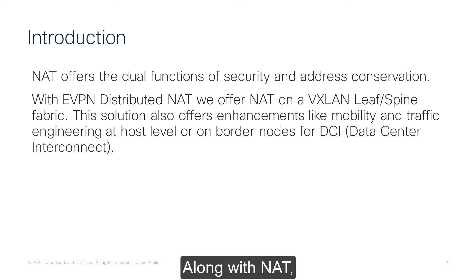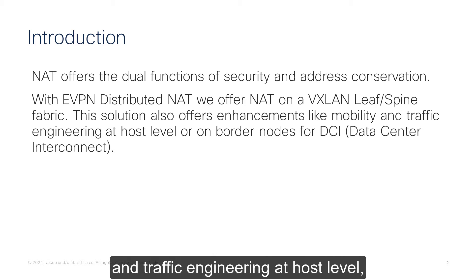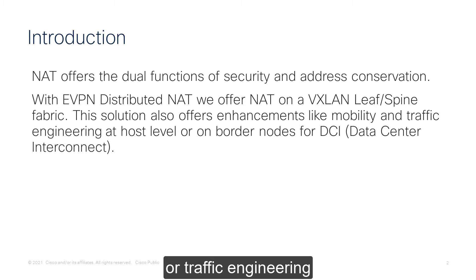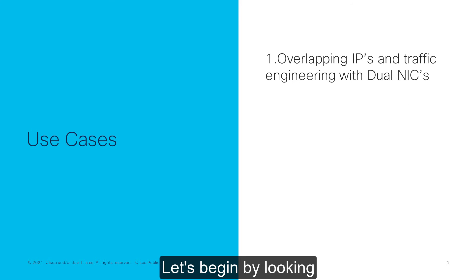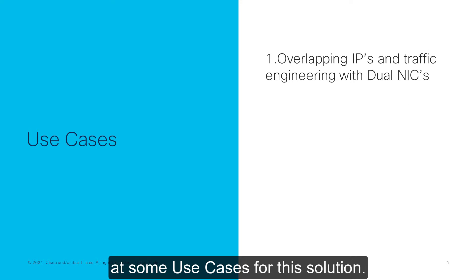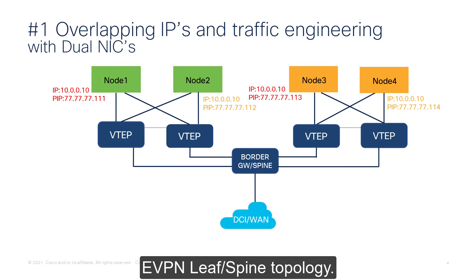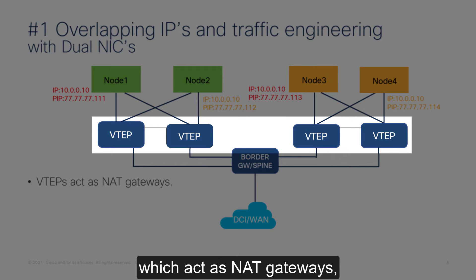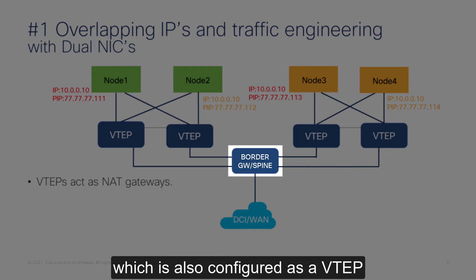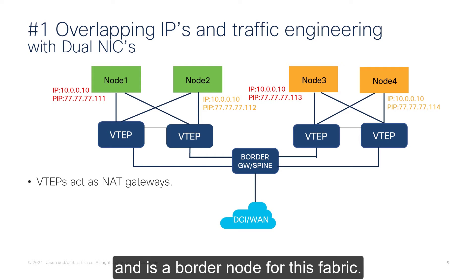Along with NAT, this solution provides enhancements like mobility and traffic engineering at host level, or traffic engineering on the border nodes for data center interconnect. Let's begin by looking at some use cases for this solution. I want to start with overlapping IPs. This diagram here is a typical VXLAN eVPN leaf-spine topology. We have 4 VTEPs which act as NAT gateways, and we have a spine which is also configured as a VTEP and is a border node for this fabric.